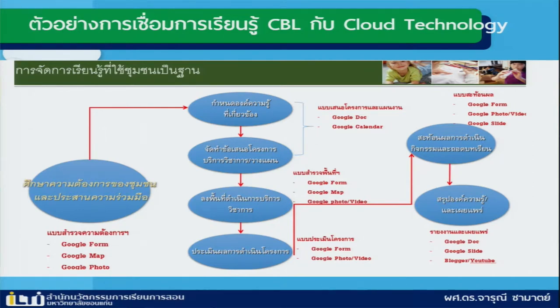เช่น เราใช้ Google Form เราก็จะทำเป็น Form เพื่อที่จะไปสำรวจ จากนั้นจะเป็น Google Map ก็คือการลงพื้นที่ เราสามารถที่จะปักหมุดตรงนั้นได้เลยในการปักหมุด